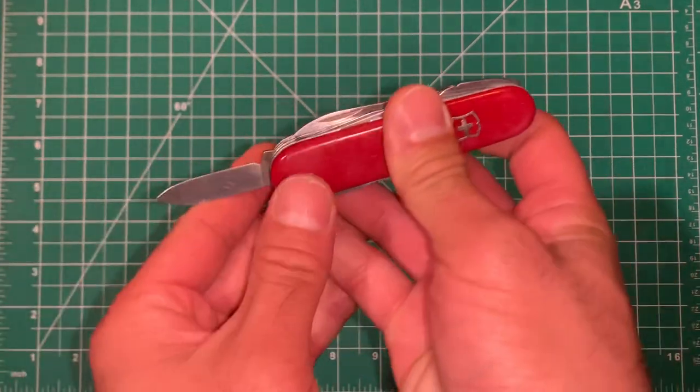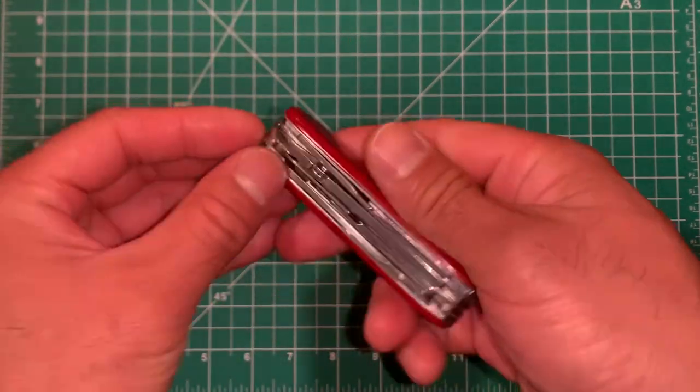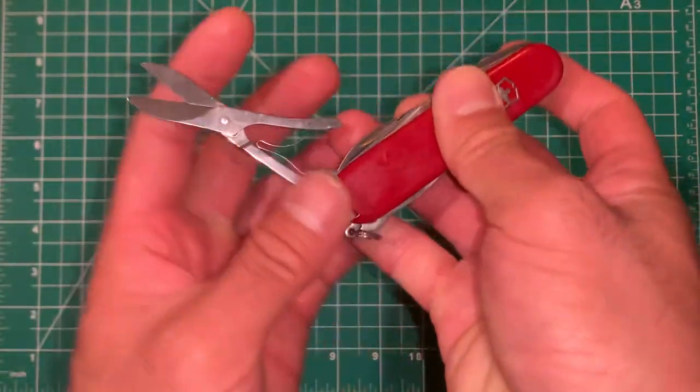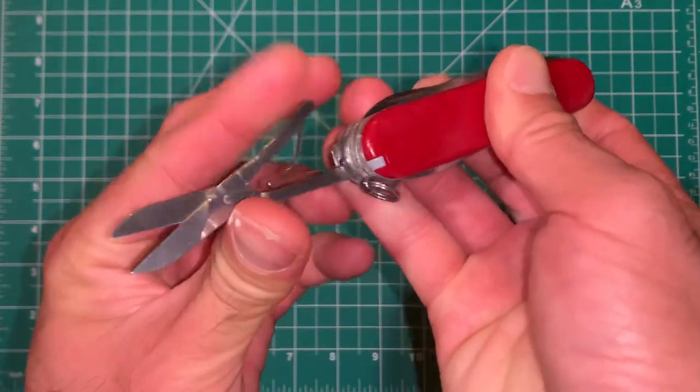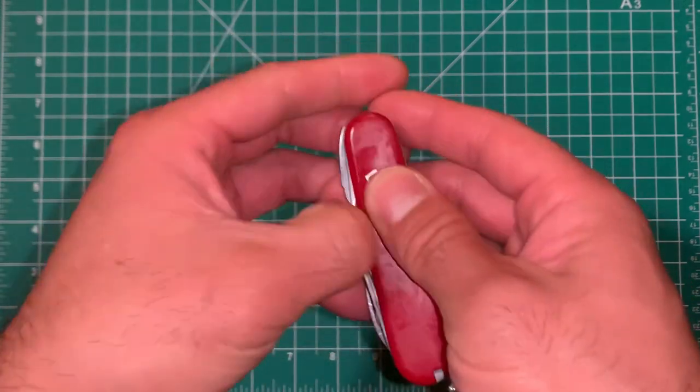You've got your secondary blade, the pen blade. We have the scissors, and we've got your opener layers.